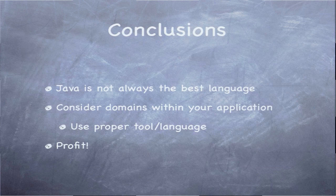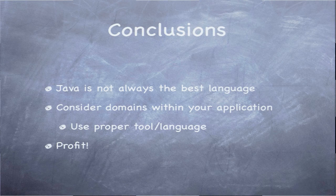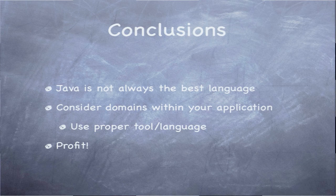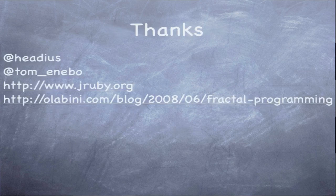So the conclusion we want you to get from this is that Java is not always the best language, and there are good reasons to start looking at other languages and pulling them into your applications. But when you do it, really consider the domains where these languages would fit. If you're doing a web interface, maybe one of the dynamic languages and their frameworks works best for you. If you're doing a lot of concurrent data processing, maybe that's where you want to start putting Clojure or Scala to work. Isolate them into their own domains — it keeps the integration hassles much lower and likely makes your fellow developers a lot happier too. And that's all we have — some time for questions.